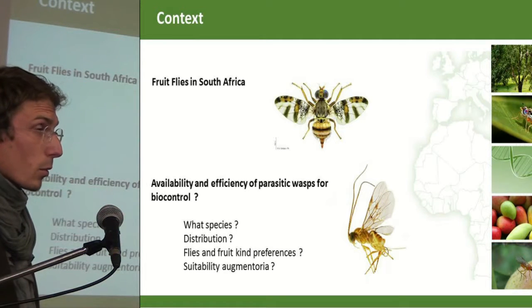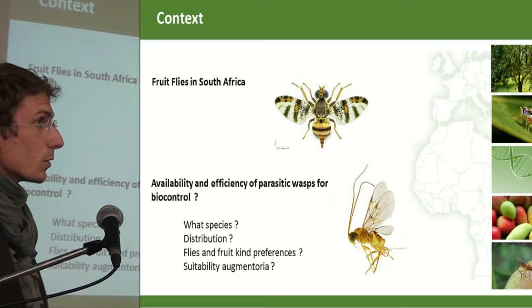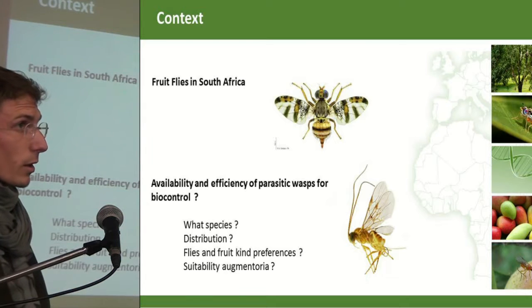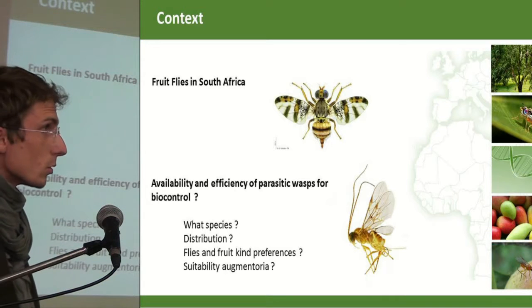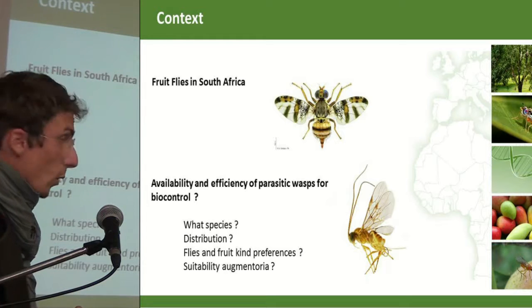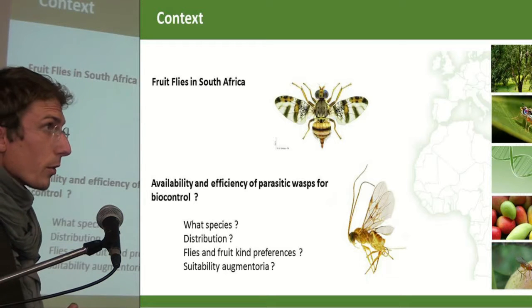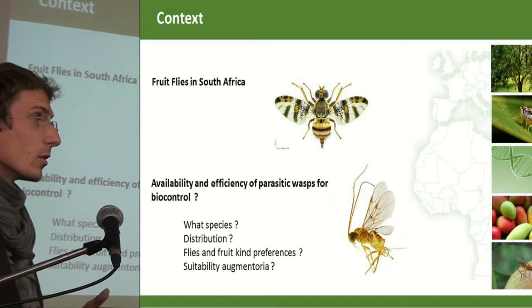The problem in South Africa is we don't really know what species are there, where they are distributed, what fruit flies they prefer, and what fruits they prefer. Maybe they parasitize fruit flies in some fruits and not in others.